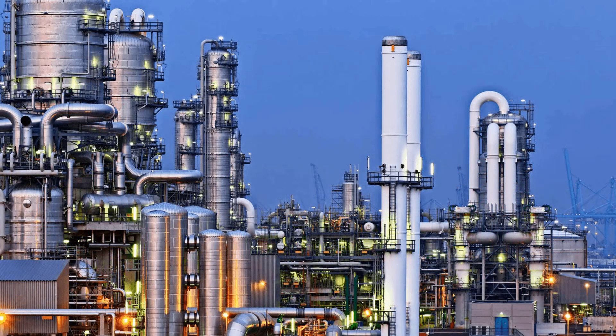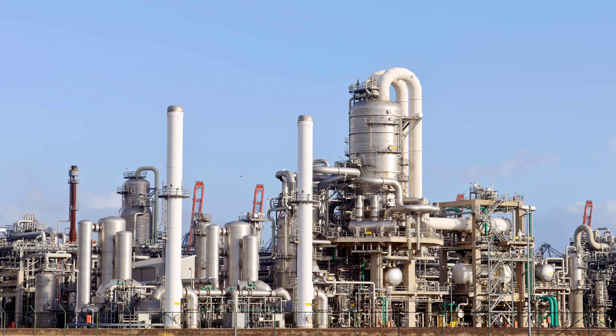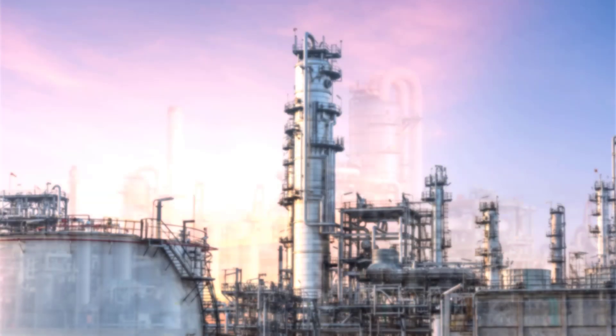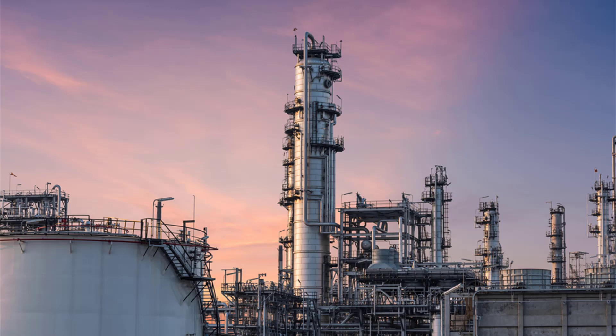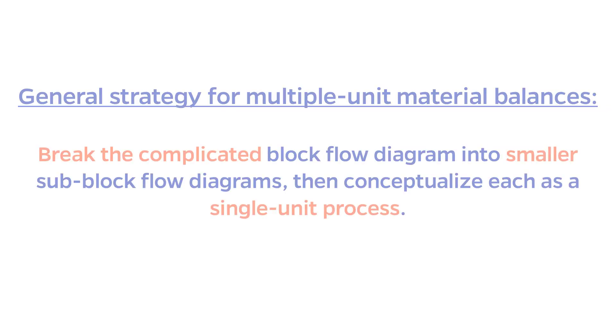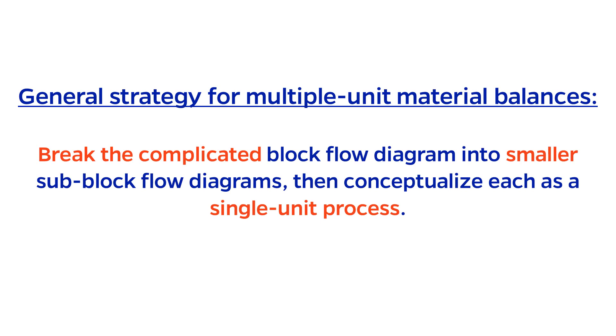Most real chemical engineering processes involve many process units. In this video we will extend the logic from solving material balances around a single process unit to solving material balances on multiple unit processes. The general idea here is to break the more complicated block flow diagram into smaller sub block flow diagrams, and then conceptualize these sub block flow diagrams as a single process unit.